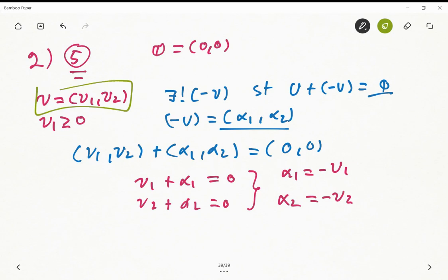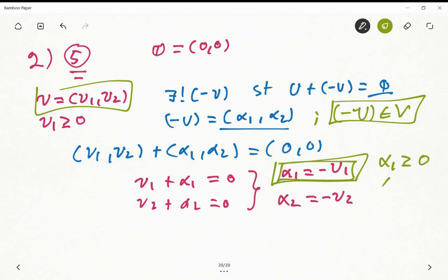But what happens here is that α1 is part of the vector, so -u should be part of the vector space. That means it should be part of this element V. And if this is true, then α1 should be greater or equal to zero, and the only possibility that this equation holds is that α1 equals u1, that both equal zero.